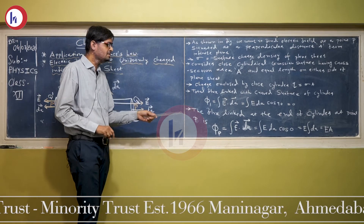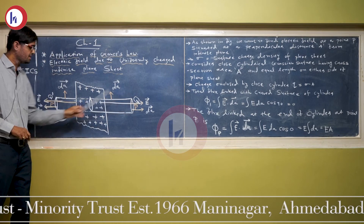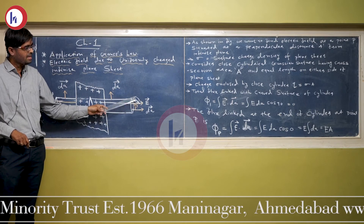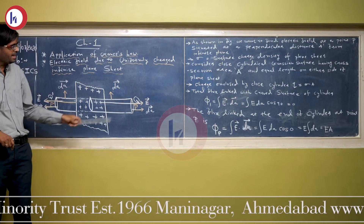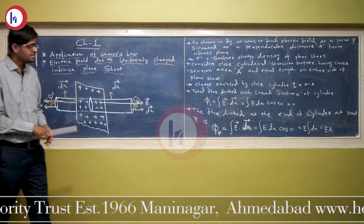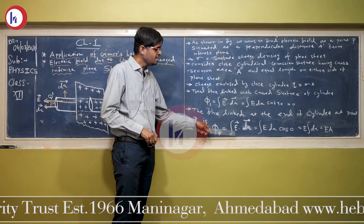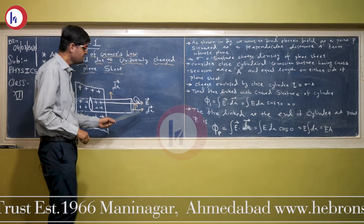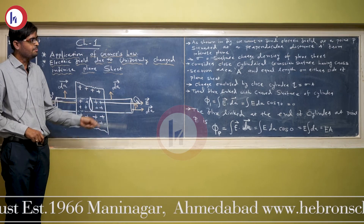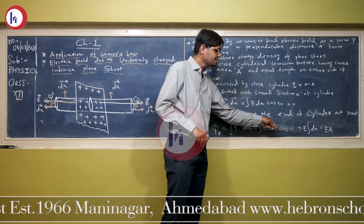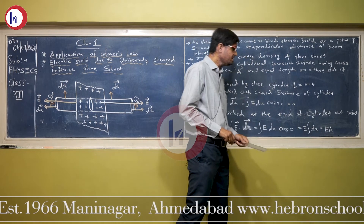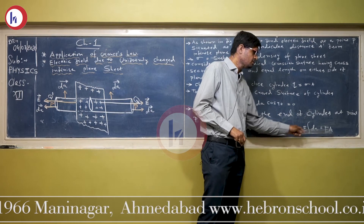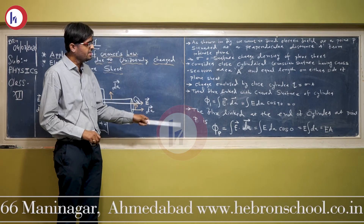Now we write the flux linked at the end of the cylinder at point P. At point P, the electric field and the area vector are in the same direction, so the angle between them is 0. The flux at P is the integral of E dot dA, which equals E dA cos 0. Since cos 0 is 1 and the electric field is constant over the cross-section, it comes out of the integral. The integration of all area elements gives the total cross-section area A, so the flux at point P is E times A.